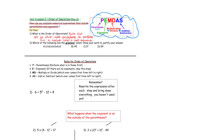Remember, a math expression does not have an equal sign. Take a look at number two: which of the following has the greatest value? Show your work to justify your answer. Pause the video and give it a try. The correct answer was choice A, because when you multiply out all of those twos, your product is 64.